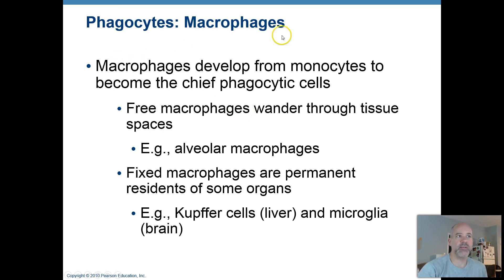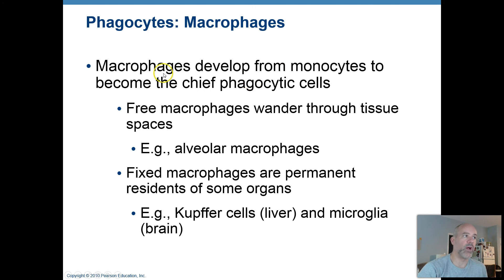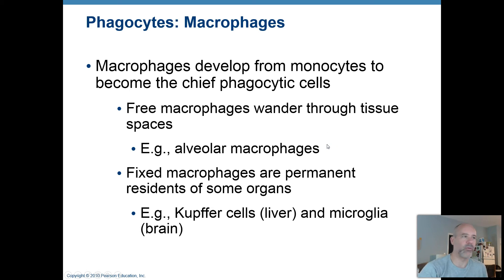Your macrophages — when we studied the blood earlier, we learned that in your blood you have monocytes. Those are pretty big white blood cells, kind of oval in shape, and they have a nucleus shaped like a horseshoe. When those leave the blood and get into your interstitial fluids, they become wandering macrophages, or free macrophages. They ooze around kind of like amoebas, wandering around looking for things that are foreign to the body that they need to ingest.